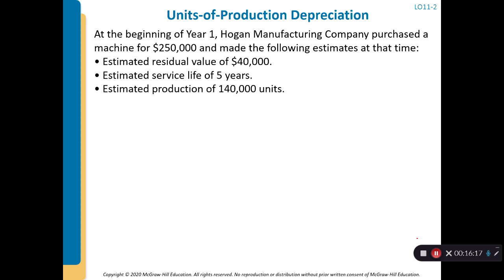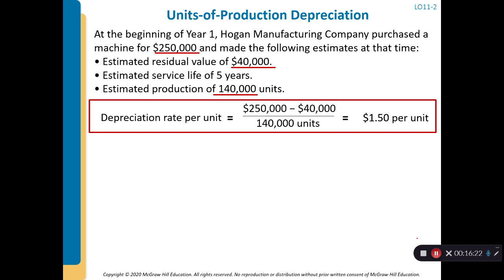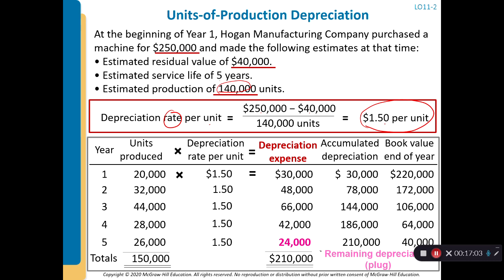For the unit-of-production method: using the same machine — cost $250,000, residual value $40,000, estimated total production of 140,000 units — the depreciation rate per unit is ($250,000 − $40,000) ÷ 140,000 = $1.50 per unit. To calculate annual depreciation expense, multiply the actual units produced in each year by $1.50 per unit.